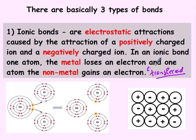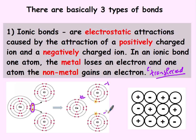In this picture we have calcium. Calcium has two valence electrons and chlorine has seven. So calcium is going to lose one valence electron to each chlorine, giving it a plus two charge, and each chlorine gets a negative one charge.